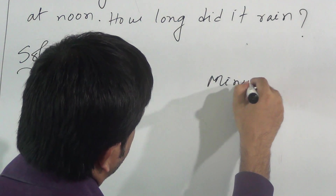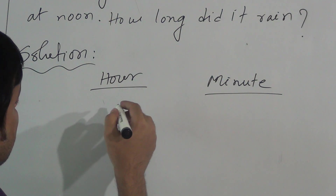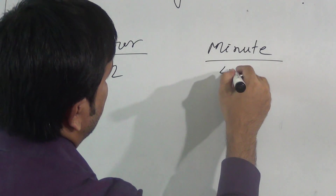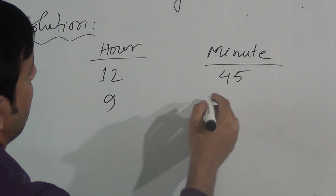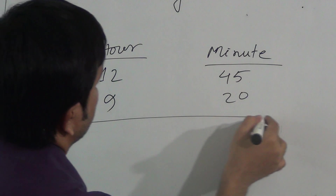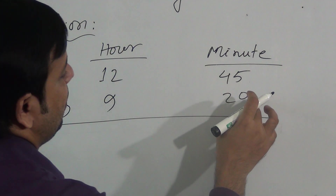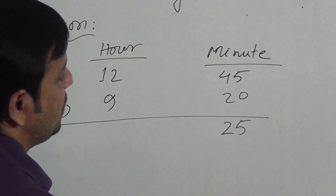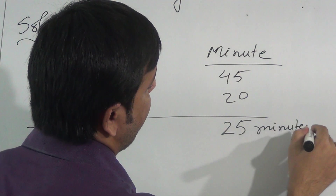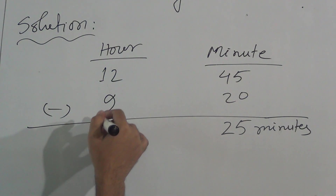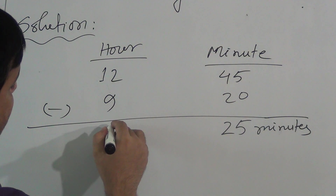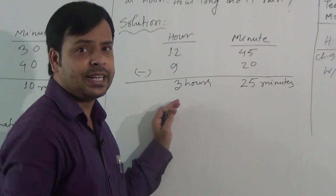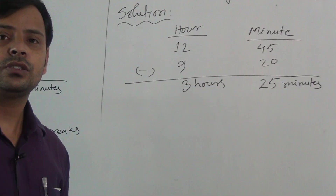We write here 'hour' and 'minute'. The ending time is 12 hours 45 minutes, and the starting time is 9 hours 20 minutes, so we subtract. Subtract 0 from 5 you get 5, subtract 2 from 4 you get 2 — giving 25 minutes. Then subtract 9 from 12 you get 3 — giving 3 hours. So the answer is 3 hours 25 minutes. It rained for 3 hours 25 minutes.